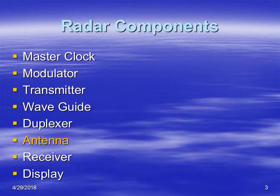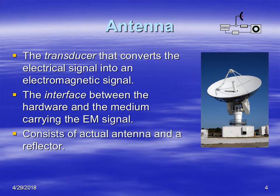We're working our way into the antenna now. An antenna is a transducer — it takes the electric signal coming out of the transmitter and sends it on its way through the medium. It acts as the interface between the hardware, what we call the radar, and the medium carrying the electromagnetic signal, which is our atmosphere.